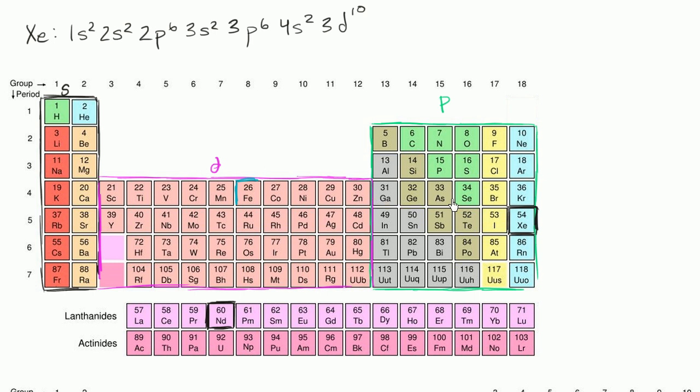Then you're back in the p-block. And since you're in the fourth period, it's going to be 4p. And once again, to fill it up, you have six electrons.